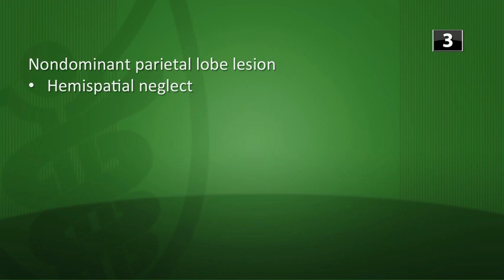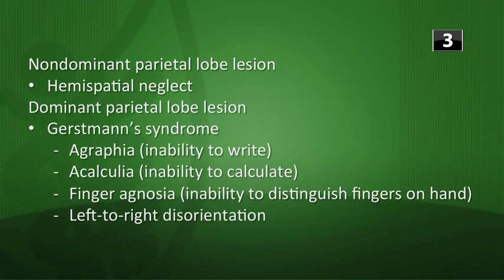Next: how does the presentation of a dominant parietal lobe lesion differ from a non-dominant parietal lobe lesion? The non-dominant parietal lobe, typically the right, presents with hemispatial neglect — you ignore the other side of the world and don't recognize the other half of your body as your own. The dominant lobe lesion, typically the left, causes Gerstmann's syndrome: agraphia, acalculia, finger agnosia, and left-right disorientation.